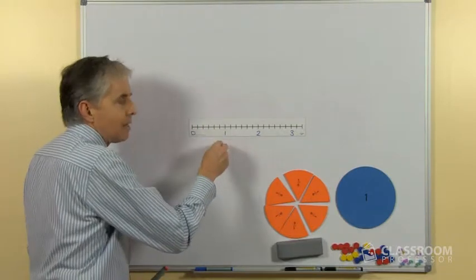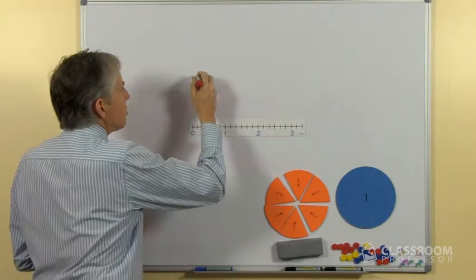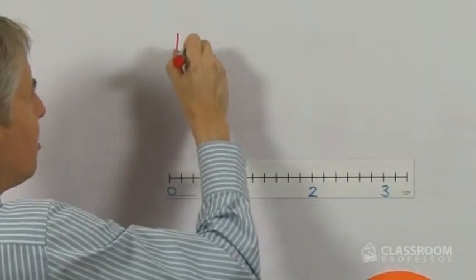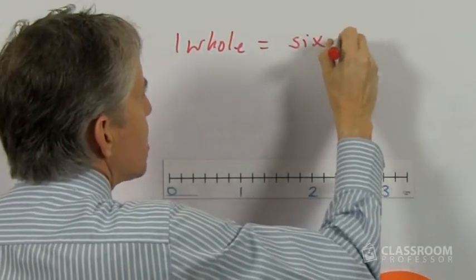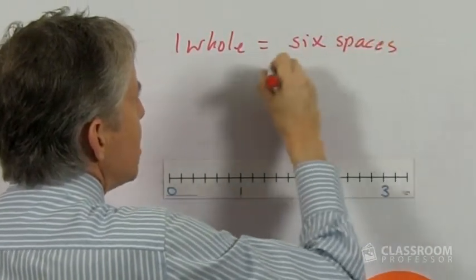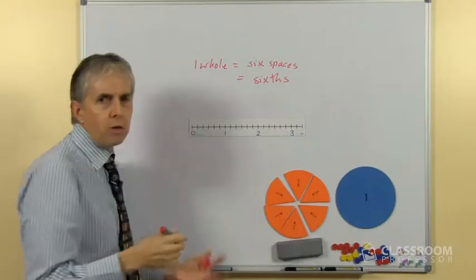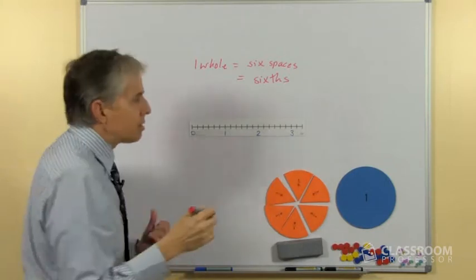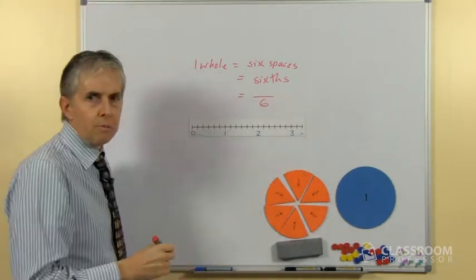So we need to say how many spaces are there? What are we going to call them? There are 6 spaces, so we could even write it like this: 1 whole equals 6 spaces and we're going to call them sixths. Why do we call them sixths? Because there are 6 of them. How do we write them? Well they look like that, they've got a 6 on the bottom.